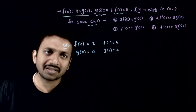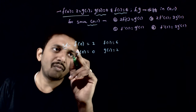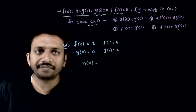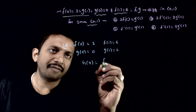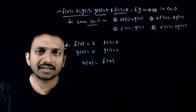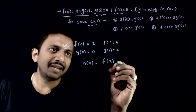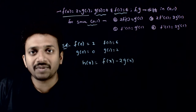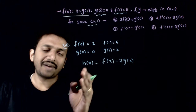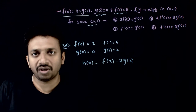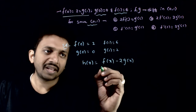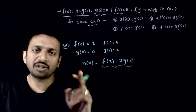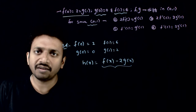What I consider is: let us define a function h(x) = f(x) - 2·g(x). Let us see what happens with this function. So h(x) = f(x) - 2g(x). Since f(x) and g(x) are differentiable functions, h(x) is also a differentiable function.